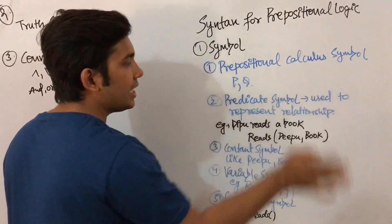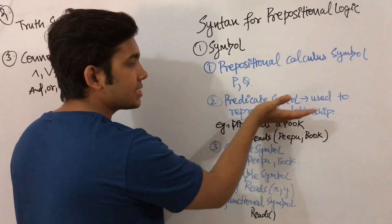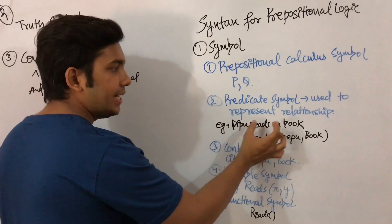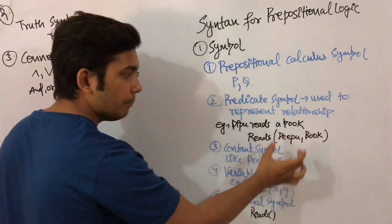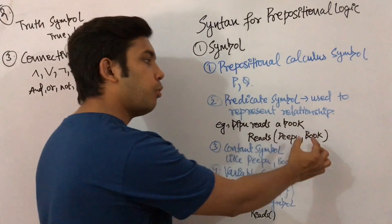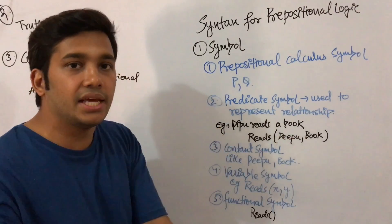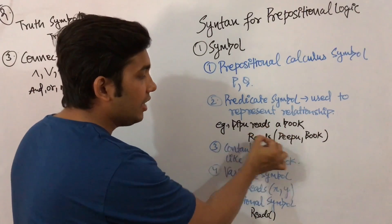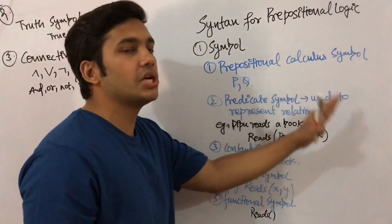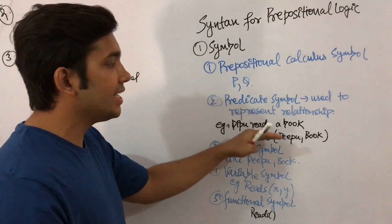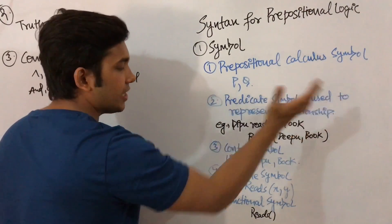The second type of symbol is the predicate symbol, which is used to represent relationships. For example, 'Deepu reads a book' can be written as reads(Deepu, book), where 'reads' is the relationship between Deepu and book. Similarly, 'Deepu eats mango' can be written as eats(Deepu, mango). So predicate symbols represent relationships.